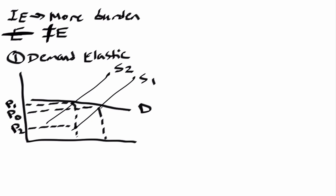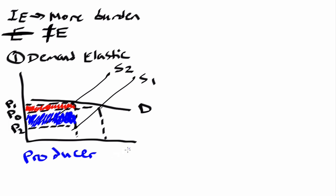Now let's think about the overall burdens for both consumers and producers. The consumer is now paying a price of P1 versus the original price of P0, so that difference is the overall tax burden on the consumer. For the tax burden on producers, it's the difference between the price they originally would receive and the new price they'll receive, which is P2. You can clearly see that because the demand side is more elastic, the producer is going to bear more of the tax — going back to the rule that the more inelastic side bears a larger portion of the burden.